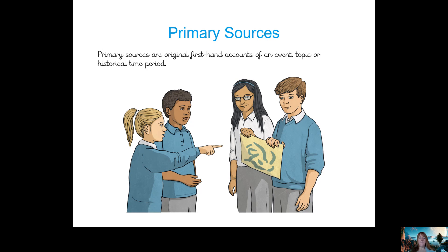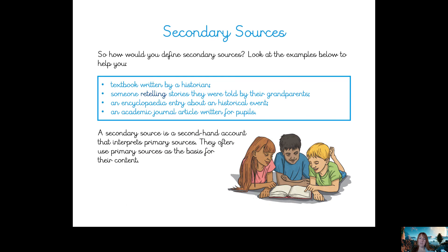Primary sources are original, first-hand accounts of an event, topic, or historical time period. So primary sources are from that historical time, or they are witness accounts — people that were actually there saying exactly how it was. Whereas secondary sources are second-hand accounts that interpret primary sources. It could be a historian telling you about the primary source, or telling you about a weapon they have in front of them — but because they are telling you, it becomes a secondary source.